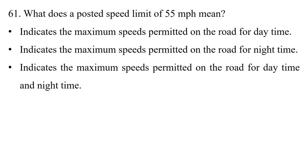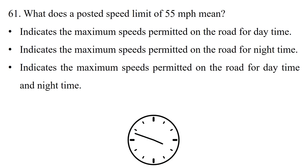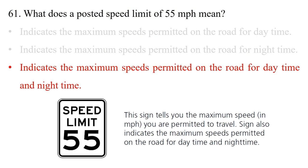Question: What does a posted speed limit of 55 miles per hour mean? Option 1: Indicates the maximum speed permitted on the road for daytime. Option 2: Indicates the maximum speed permitted for nighttime. Option 3: Indicates the maximum speed permitted for daytime and nighttime. The answer is option 3. This sign tells you the maximum speed in miles per hour you are permitted to travel, for both daytime and nighttime.